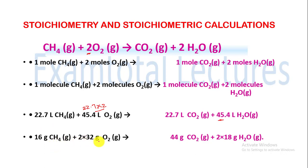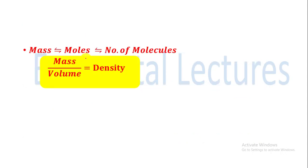In terms of liters, 22.7 liters of methane reacts with 45.4 liters of oxygen (22.7 × 2, because the stoichiometric coefficient is 2), producing 22.7 liters of carbon dioxide and 45.4 liters of water. In grams, 16 grams of methane reacts with 2 × 32 = 64 grams of di-oxygen to give 44 grams of carbon dioxide plus 2 × 18 = 36 grams of water.